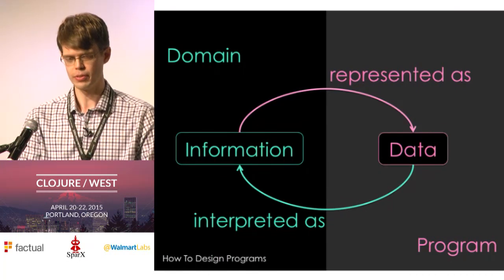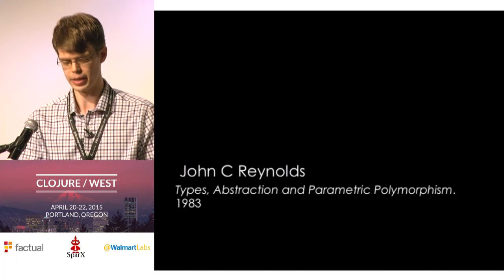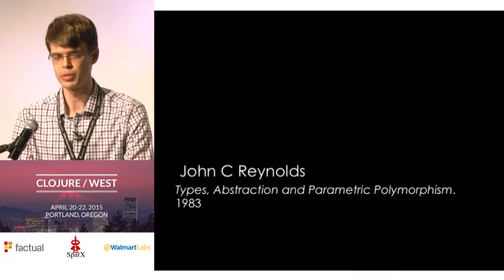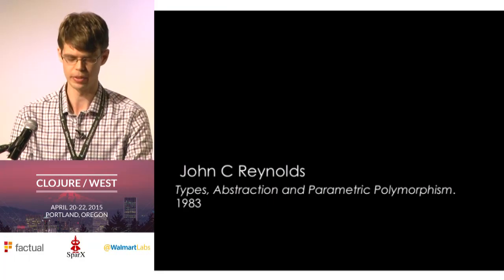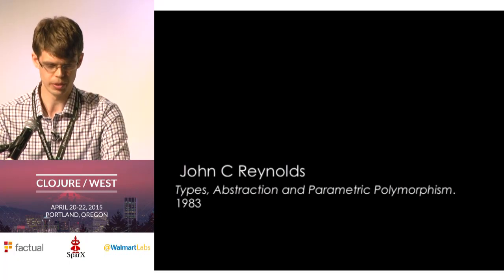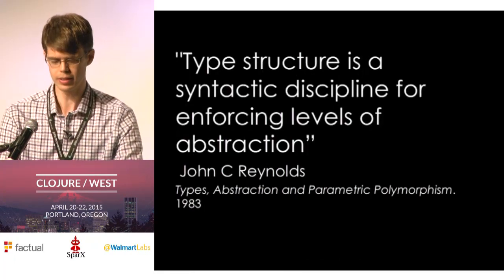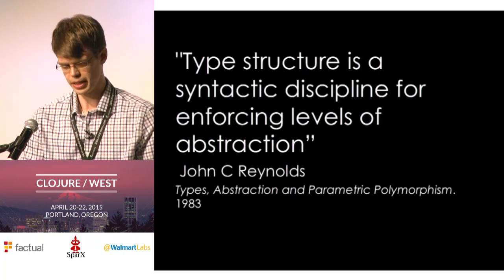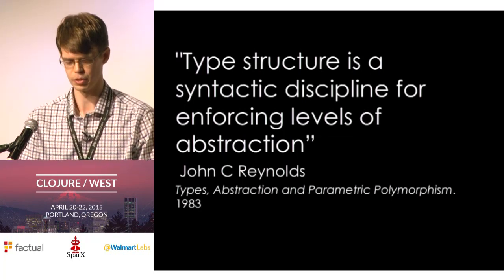To talk about how types fit into this model, I'm going to work through what I mean by a type system, as described by John Reynolds in his paper 'Types, Abstraction, and Polymorphism.' It's a really classic paper in type theory about how types are a way we write abstractions. Reynolds says: 'Type structure is a syntactic discipline for enforcing levels of abstraction.'